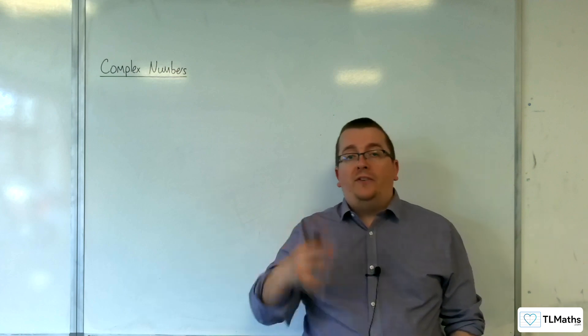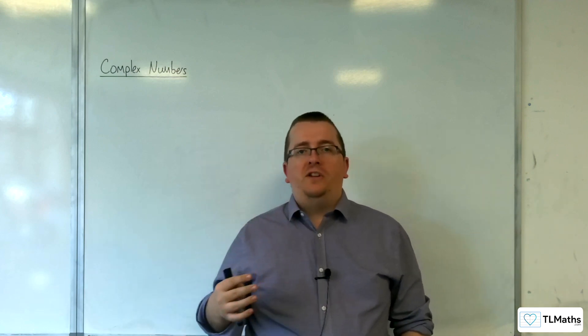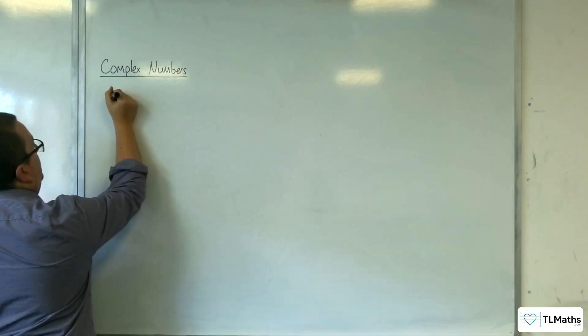In the previous video, we investigated geometrically what it means to multiply two complex numbers together. So let's say we've got two complex numbers, Z1 and Z2.